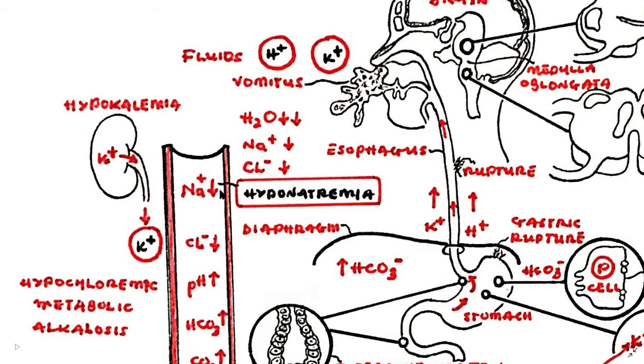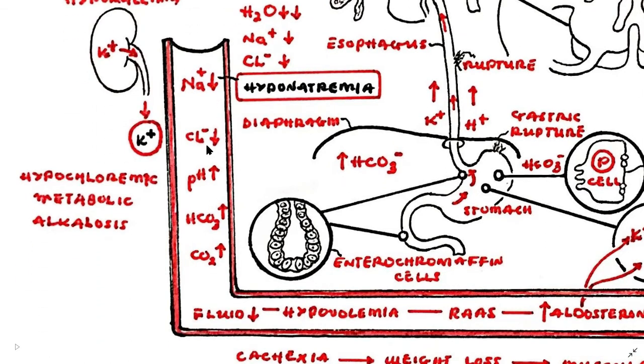The continued loss of chloride ions, increasing blood pH with elevated bicarbonate ions and increasing carbon dioxide leads to hypochloremic metabolic alkalosis.